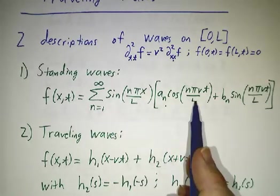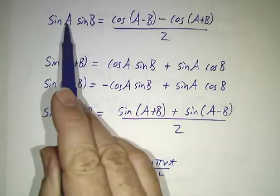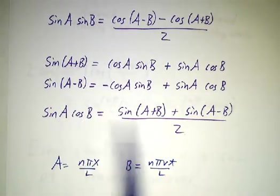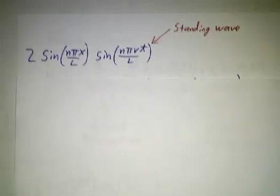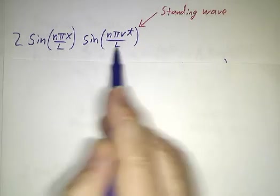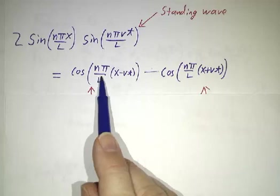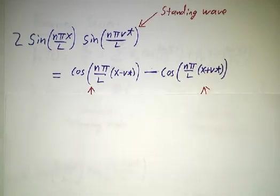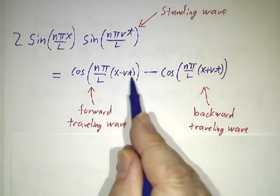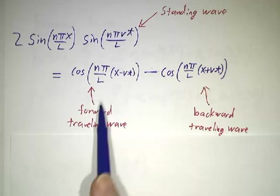Now remember that our standing waves are sin of a cos of b and sin of a sin of b. And we know how to turn sin of a sin of b into sum of cosines. So if we have a standing wave of the form sin of n pi x over L sin of n pi vt over L, we can write that as a cos of a minus b minus cos of a plus b. That's a forward traveling wave because it's a function only of x minus vt. And that's a backwards traveling wave because it's a function only of x plus vt. So our standing wave is the sum of two traveling waves.